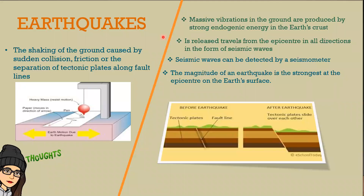An earthquake is the shaking of the ground caused by sudden collision, friction, or the separation of tectonic plates along fault lines. Its massive vibrations in the ground are produced by strong endogenic energy in the Earth's crust, and it releases and travels from the epicenter in all directions in the form of seismic waves. These waves can be detected by a seismometer.